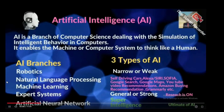Artificial Intelligence is a branch of computer science dealing with the simulation of intelligent behavior in computers. It enables the machine or computer system to think like a human.